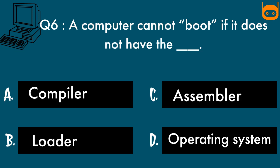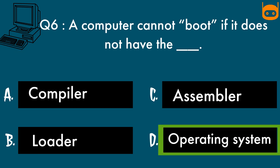The right answer is Option D: Operating system. An operating system is the system software that handles the software and hardware resources and provides services for the computer programs. So without an operating system, a computer cannot boot.